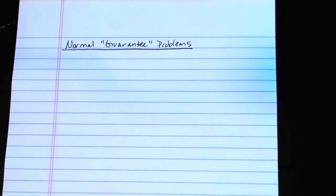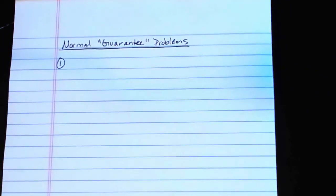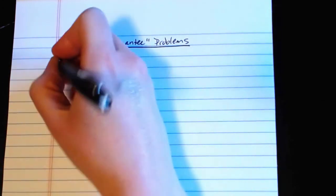For guarantee problems, similar to doing the normal application problems, there is essentially a process that tends to be used. You don't exactly have to go by this process, but it's very handy. The first thing you want to do is check to make sure a normal model applies.